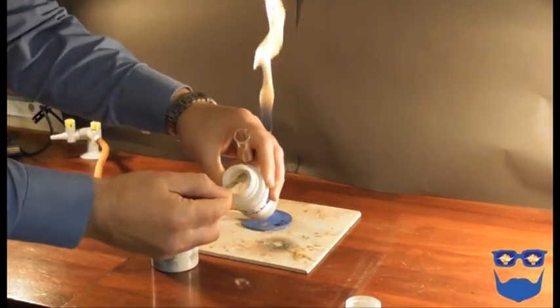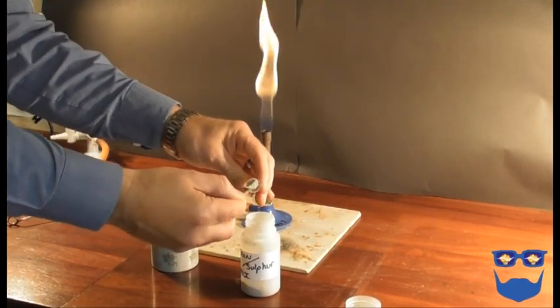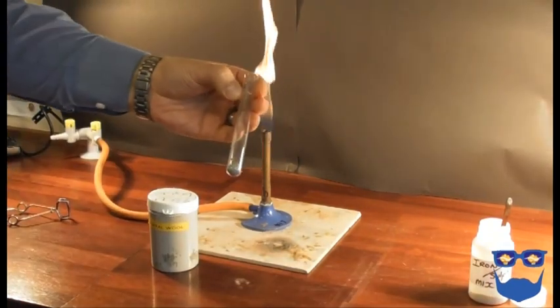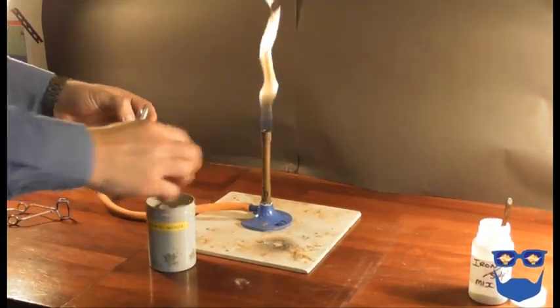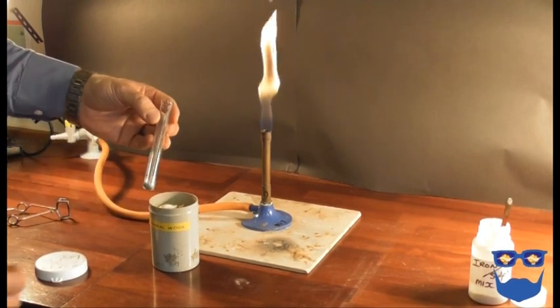Place a heaped spatula full of the mixture into your test tube. Using some mineral wool, fit it into the mouth of the tube. This is to prevent any sulfur vapor escaping.